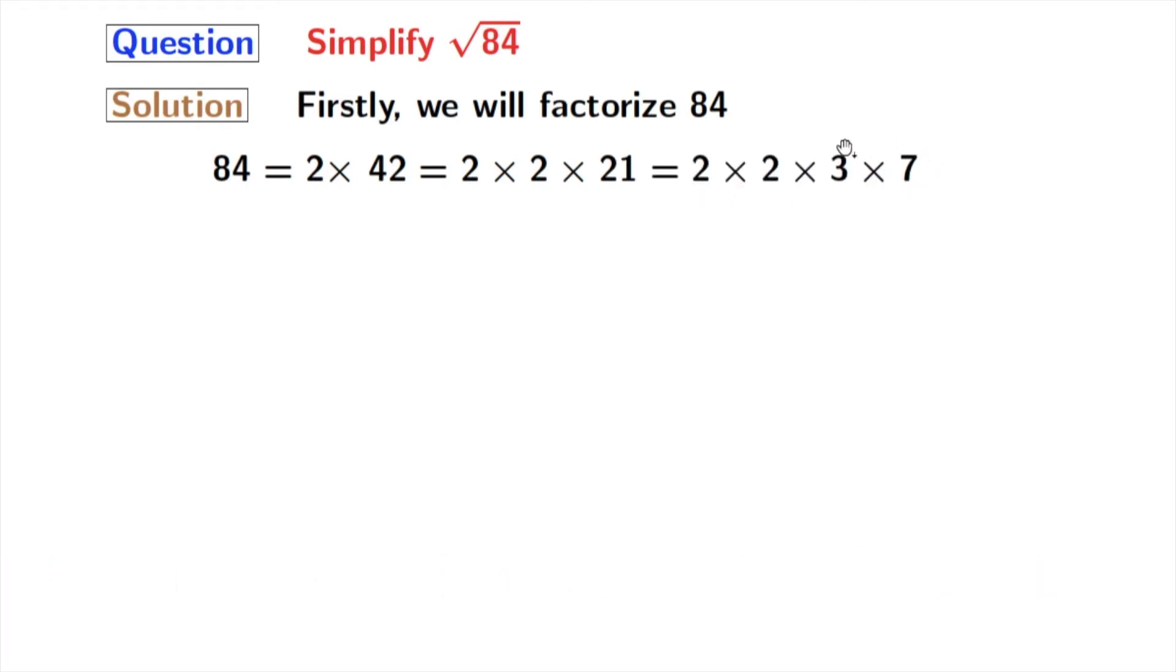Now we all know that 21 is equal to 3 times 7. Now look at these numbers. All are prime numbers, so we will not factorize further. So finally we get 84 is equal to 2 times 2 times 3 times 7.